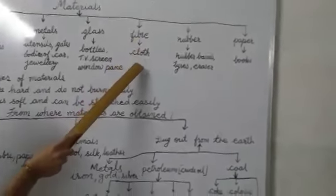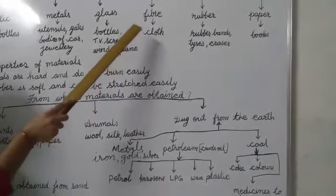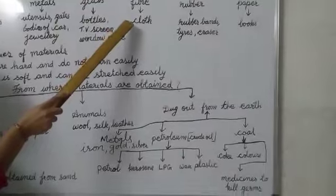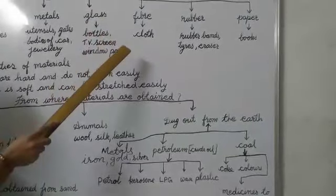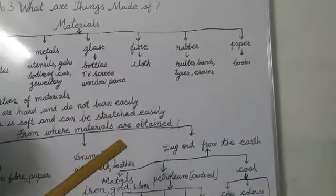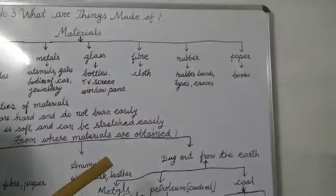Fiber. It is used to make cloth. Now, what is fiber? Fiber is a thread like thing that is obtained from plants.